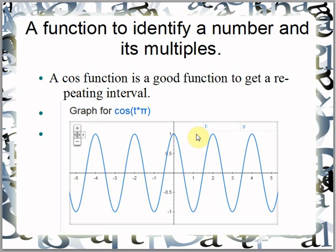I don't want to deal with negative numbers. I want a function that says: if it's 1, give me a 1; if it's 2, give me a 1; if it's a multiple, give me a 1. Otherwise, give me a 0. How do I do this? There are a lot of ways, but I'm going with squaring the function — I'm doing this specifically for a reason I'll use later on.